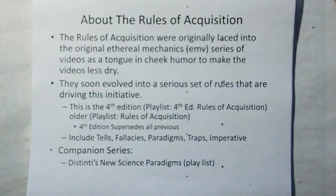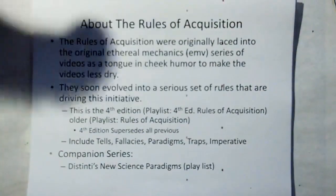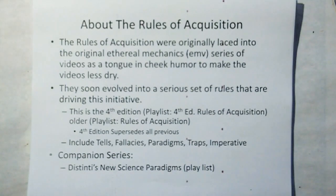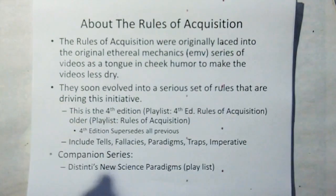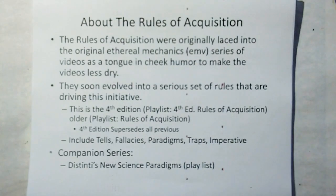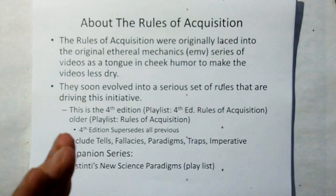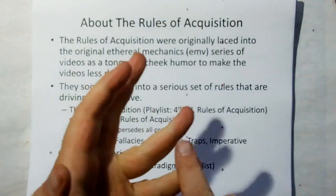About the Rules of Acquisition: they were originally started as a tongue-in-cheek humor thing to make the original EMV series of videos a little less dry. They soon evolved into a set of rules that are actually driving this initiative. This is the fourth edition, and these rules supersede any prior edition. The rules include tells — a way to determine if something's there or not — fallacy, paradigm, trap, which is like a mental trap where you get stuck going down the wrong path, and imperative — things we should do all the time.